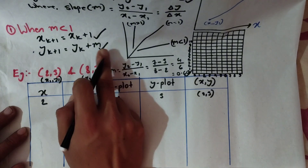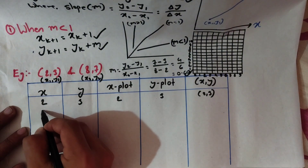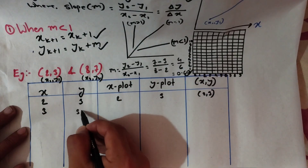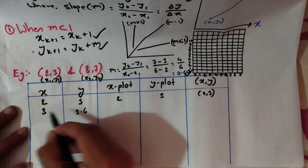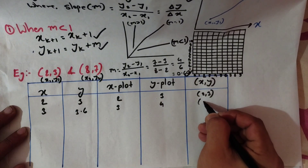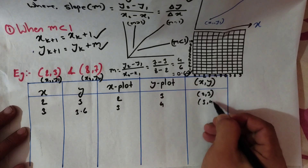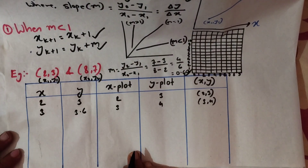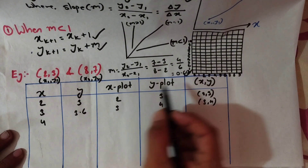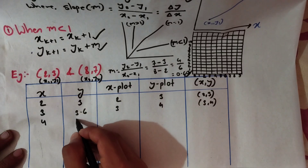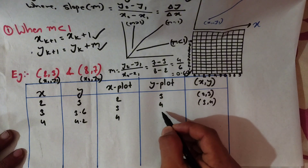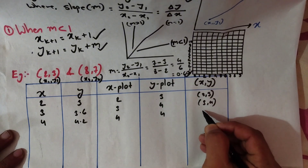Starting the slope increments: x value is 1, y is 3. Next: x is 2, y is 3 plus 0.667 equals 3.6, round off to 4 — plot point (2, 4). Next: x is 3, y is 4.2, round off to 4 — plot point (3, 4). Next: x is 4, y value is 4, plot point (4, 4).